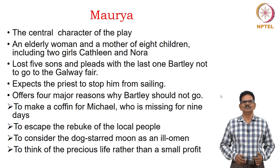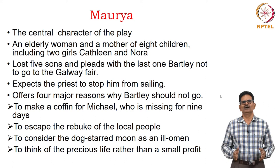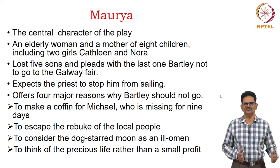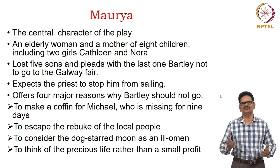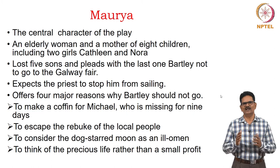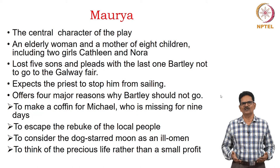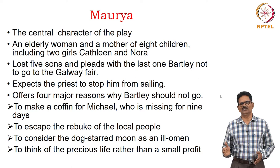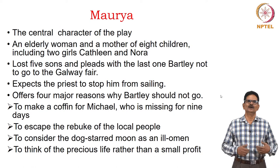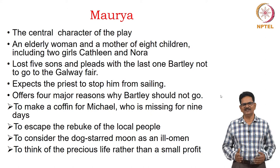Maurya offers four major reasons why Bartley should not go. First, Bartley is required to make a coffin for Michael, who has been missing for nine days. Second, Bartley has to avoid the rebuke of local people if no one is left to handle another son's burial. Third, she wants Bartley to consider the dog-starred moon as an ill-omen. Fourth, she wants Bartley to think of his precious life rather than the small profit he may get by selling the horse at Galway Fair.